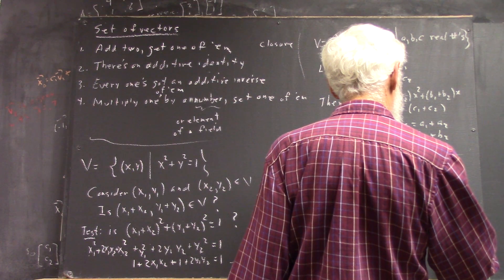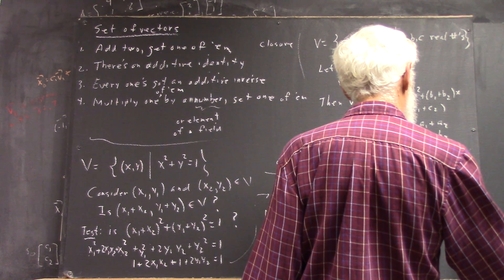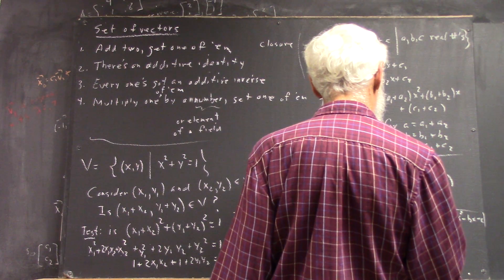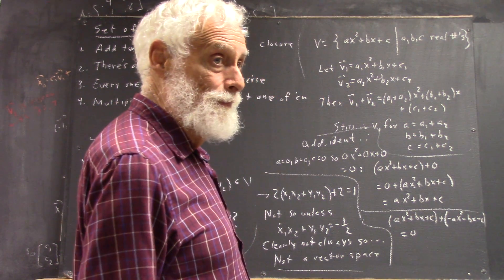Added to negative AX squared minus BX minus C equals 0.